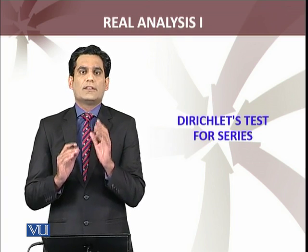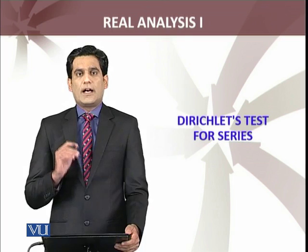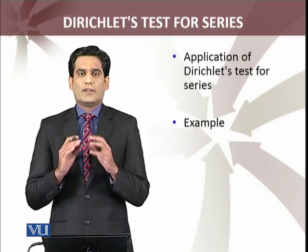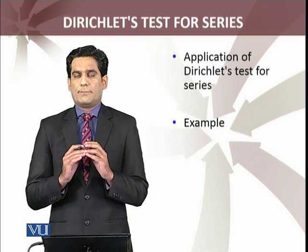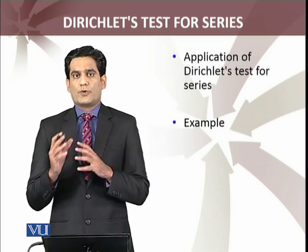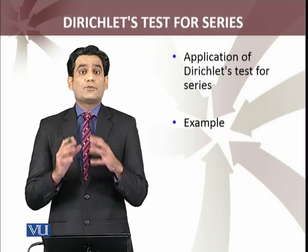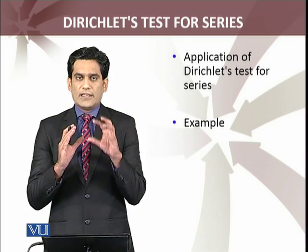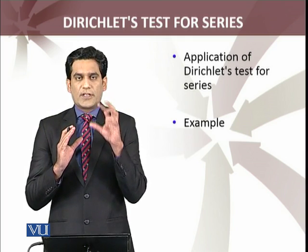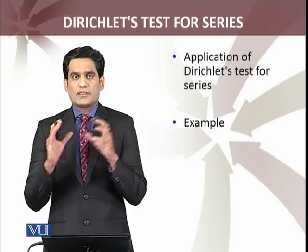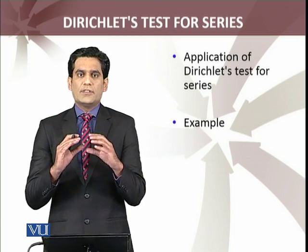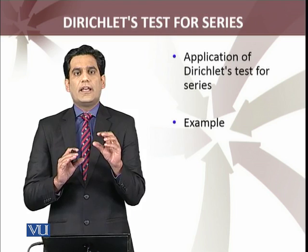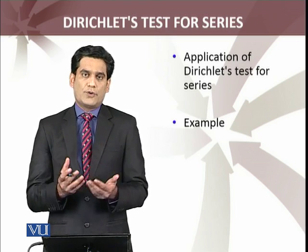Under these conditions we can conclude that the series which has the nth term as an multiplied by bn is convergent. We will apply the Dirichlet test on certain examples. In the example, the series is given, so we have to cleverly pick the terms an and bn such that the conditions on an and bn are satisfied.